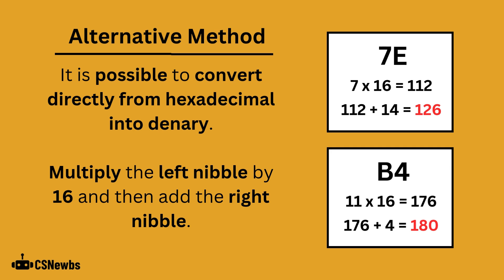In the second example, B is equal to 11, so 11 times 16 gives 176, and then add 4 for a final answer of 180.